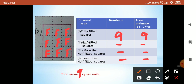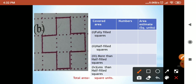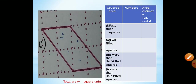Next sum: which was fully filled? I'm placing F. How many totally? Five. Half filled — not there. More than half — not there. So totally it is also five square units.